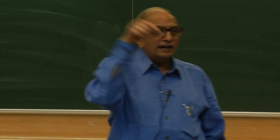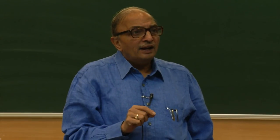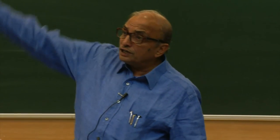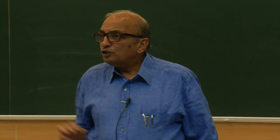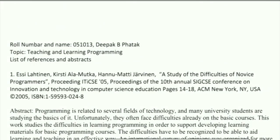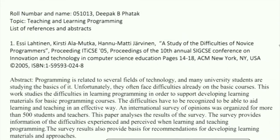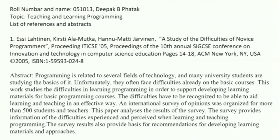First principle: whenever you look at a paper, you must prepare a growing document. For example, for a student with roll number 051013, topic 'teaching and learning programming' — you write a list of references and abstracts as a soft copy. Notice the way it is jotted down: authors such as AC Laitinen, Cristial Mukta, Hanu Mati Jervinen; title 'A study of the difficulties of novice programmers'; proceedings ITICSE 2005, pages 14–18; ACM, New York, NY, USA; copyright 2005; and the ISBN number.